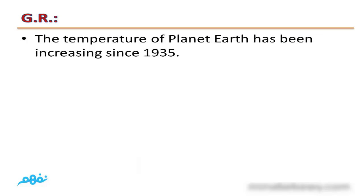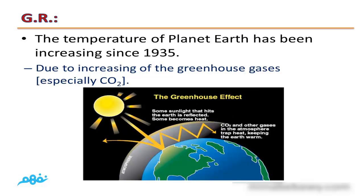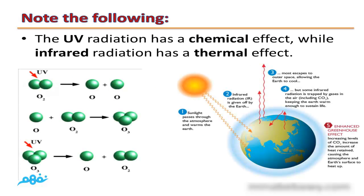The temperature of planet Earth has been increasing since 1935. This is due to the increase of greenhouse gases, especially carbon dioxide. Note that ultraviolet radiation has a chemical effect, as it plays an important role in both forming ozone molecules and destroying them through the help of chlorofluorocarbon compounds.